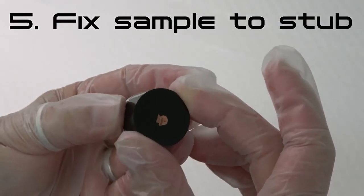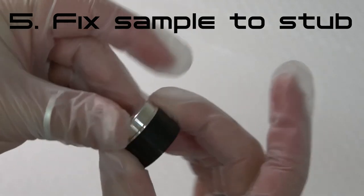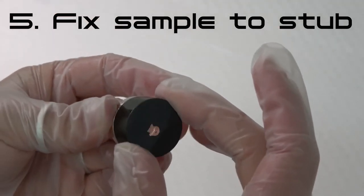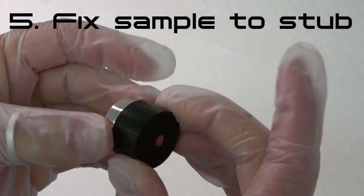Step 5: Center the sample on the stub and adhesive and apply gentle pressure to fix the sample securely. Take care not to damage the surface to be examined or to touch it with bare fingers.